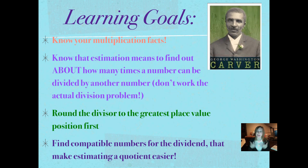The next step is to round the divisor to the greatest place value position first, and then you'll easily be able to find a compatible number for the dividend, and that will make it all easier.